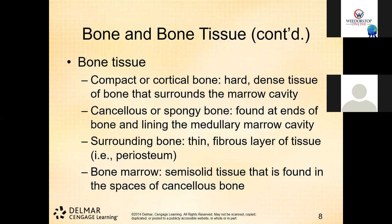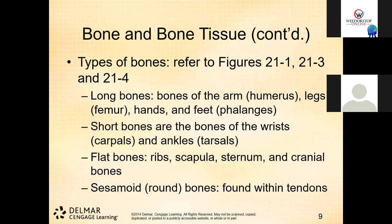Surrounding the bone is the periosteum — 'peri' meaning around, 'osteon' meaning bone. Semi-solid tissue forms within the space of cancellous bone. The outside of the bone is compact bone; the middle is spongy or cancellous bone. For bone types: long bones are found in the arms, legs, and hands, and the longest bone in the human body is the femur.